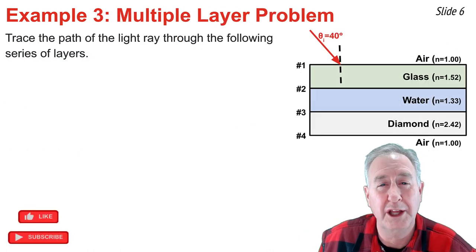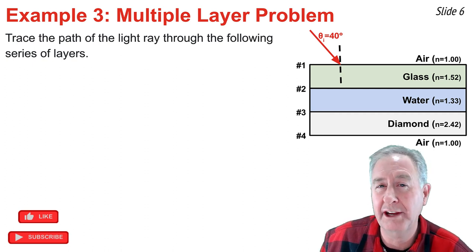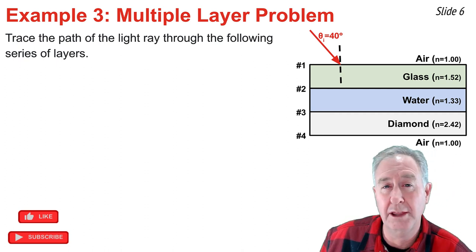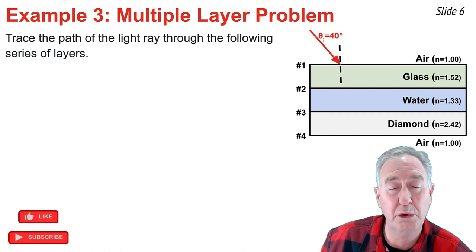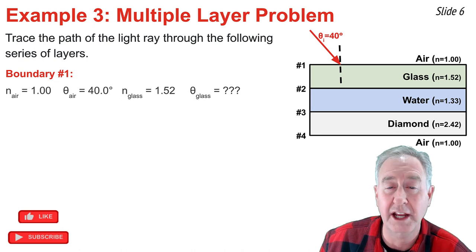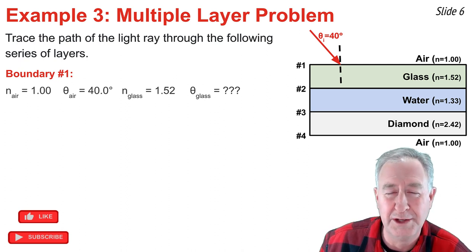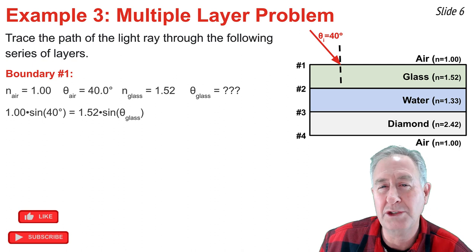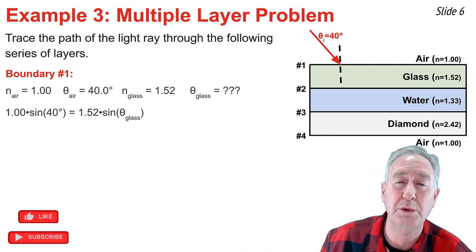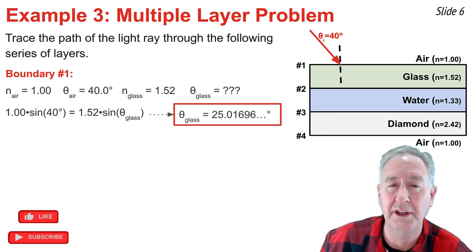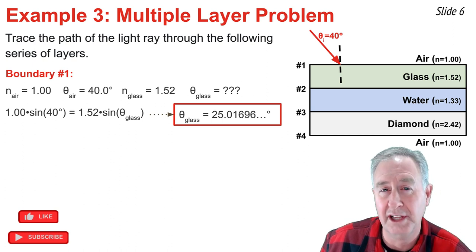Example 3 is a multiple layer problem, where you have one layer after another and must perform several calculations to trace the path of light into, through, and out of the layers. The boundaries are labeled with numbers on the diagram. Beginning with boundary one, I know the angle of incidence in air and the index of refraction values. I substitute into Snell's Law, evaluate the left side, divide by 1.52, take the inverse sine, and get the angle of refraction in the glass as light enters the first layer.